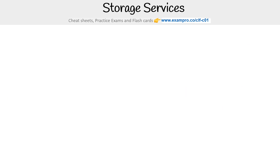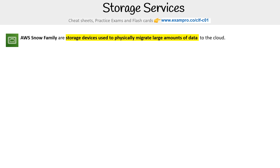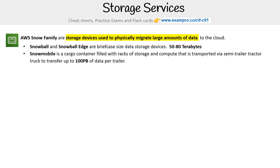There are more services to cover. We have the AWS Snow Family — storage devices used to physically migrate large amounts of data to the cloud. Snowball and Snowball Edge are briefcase-sized data storage devices between 50 to 80 terabytes — Snowball is largely retired, with Snowball Edge being the current option. Snowmobile is a cargo container filled with racks of storage and compute, transported via a semi-trailer truck to transfer up to 100 petabytes of data per trailer. Snow Cone is a very small version of Snowball that can transfer eight terabytes of data.